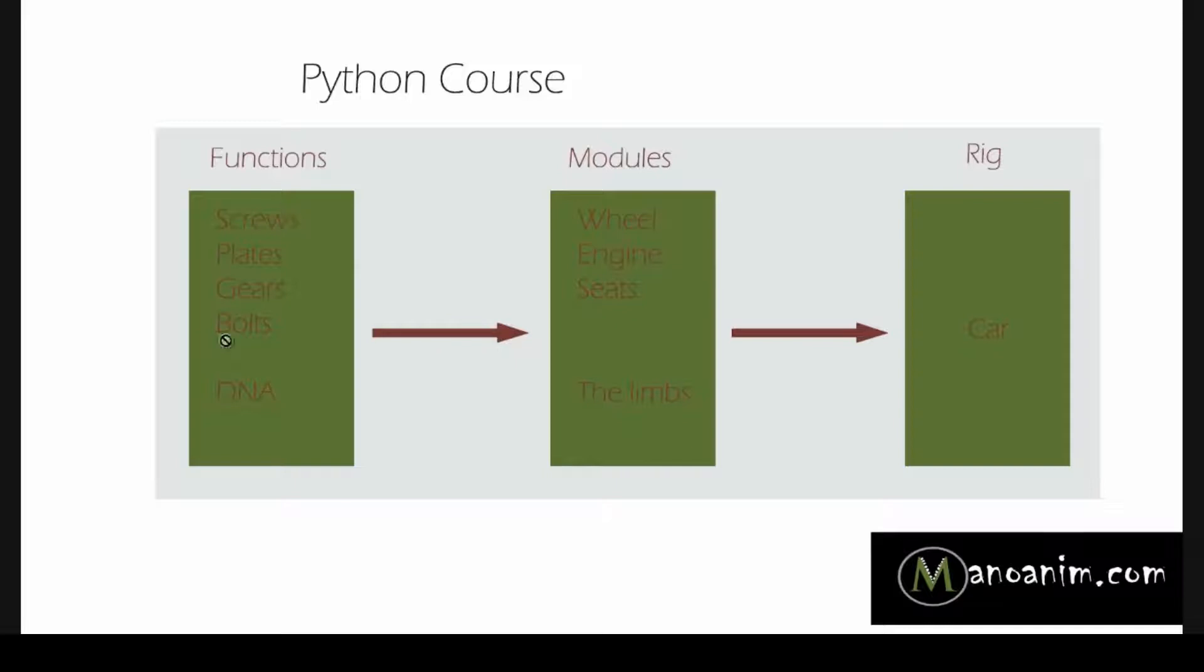So first of all, you got the DNA, you got the screws, the plates and you convert those things. So if we have some screws and we have some plates and we have some rubber, then we can create a wheel, right? So with these things, we can create a wheel.